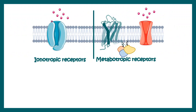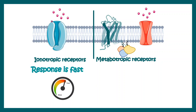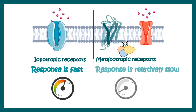Ionotropic receptors, which are ligand-gated ion channels, are very fast in terms of their action. It's just ligand binding to the channel which leads to channel opening and influx of ions, so it would rapidly depolarize or change the potential of a neuron. Whereas metabotropic receptors are slow in nature because they have to generate intermediate players, which then coordinate with each other to bring out the cellular response.